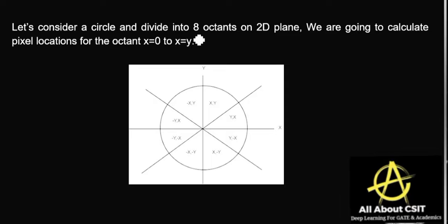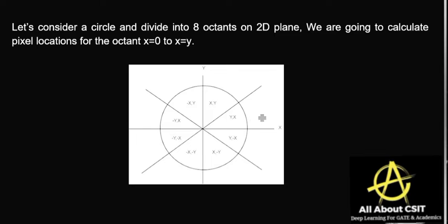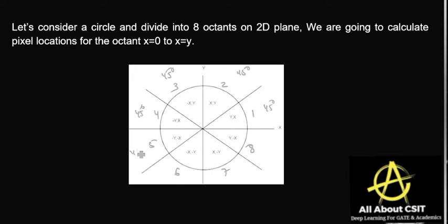Let's consider a circle and divide it into 8 octants. Each octant is 45 degrees on a 2D plane. We are going to calculate the pixel location for the octant from x=0 to x=y — we generate points only for the first quadrant.